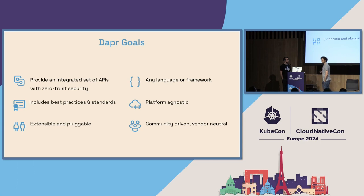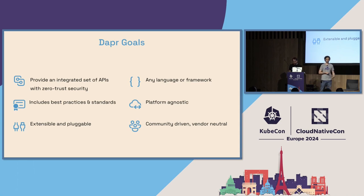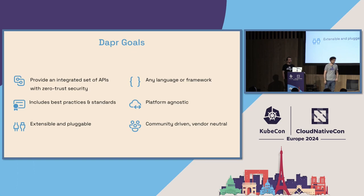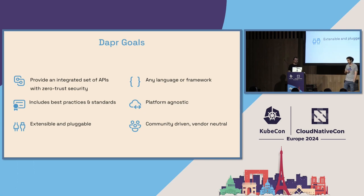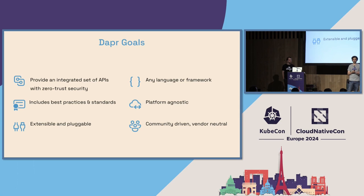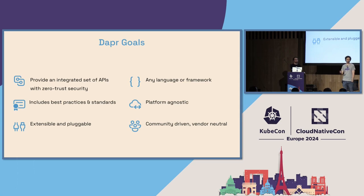Dapr has a set of goals. The most important: first, to give developers tools that solve their problems of the day — meaning Dapr changes with the time. If there's a new problem application developers face, Dapr will be set to meet that problem, which is why Dapr is continuing to add more APIs. It's vendor neutral — it's part of CNCF, an incubating project. Zero trust security is very important, extending beyond just service-to-service communications all the way from your application to your infrastructure. And it's important to become platform agnostic — Dapr can run on Kubernetes, but it needs to run anywhere, because people are not just running on Kubernetes.